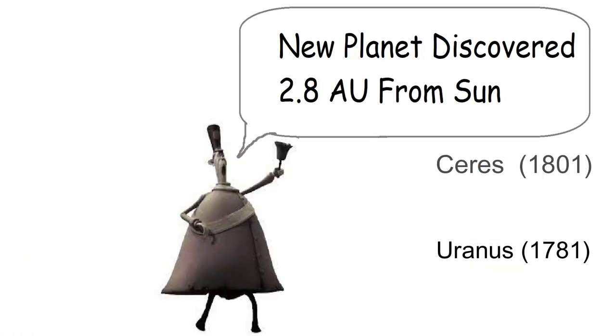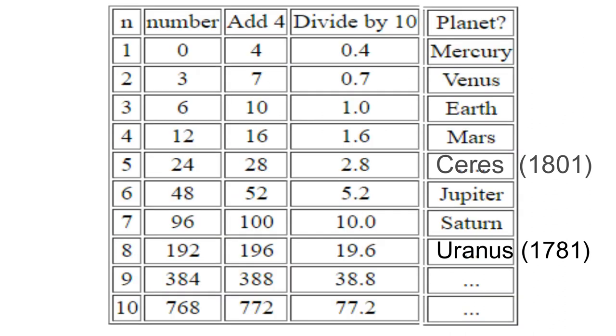Voila! They did find one, called Ceres. Alas, Ceres did not rise up to the planet's status, since people soon discovered many other planetoids, or dwarf planets. Since they were observed as small points of light, just like stars, the planetoids were called asteroids.